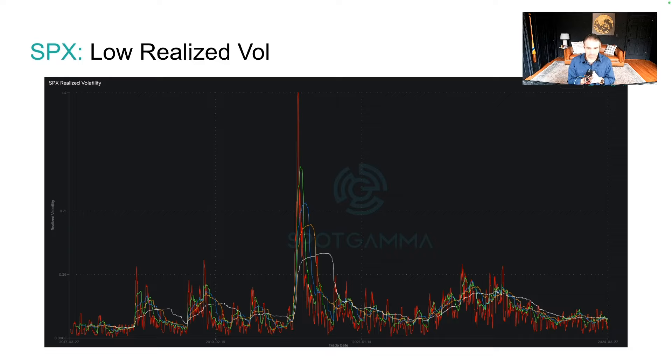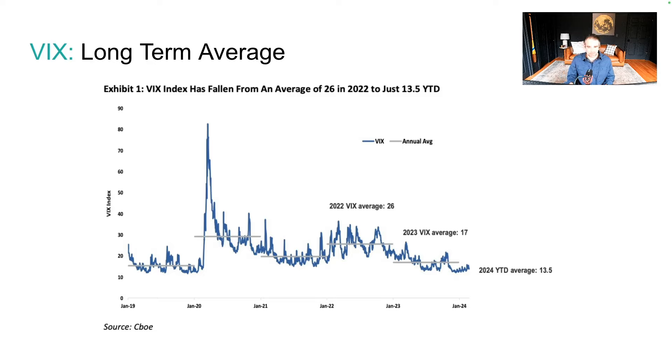In 2017, the VIX was similarly low but it doesn't seem to be anomalous. Here you can see what the average is — this is from the CBOE.